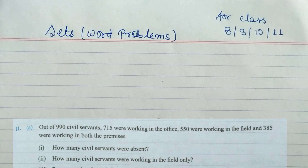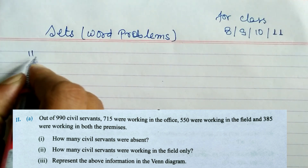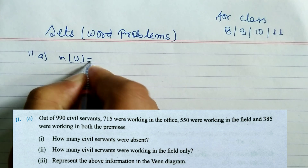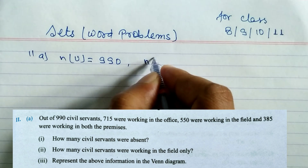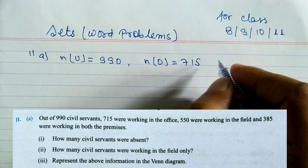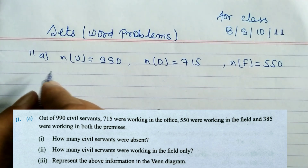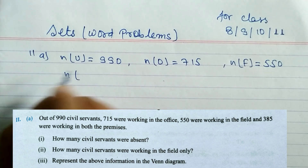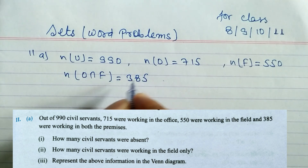Question 11a: out of 900 civil servants, total number of civil servants n(U) = 900. 715 working in office, 550 working in field, and 385 working in both premises. So n(O) = 715, n(F) = 550, and O intersection F = 385.